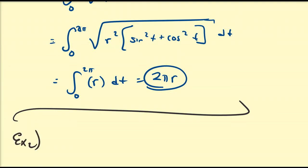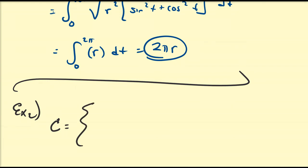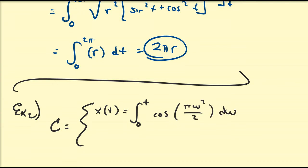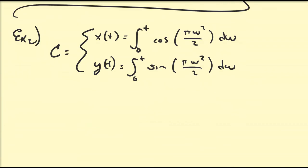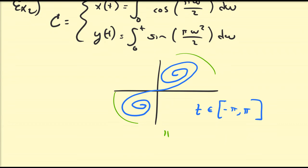Let's work through a second example. This shape is a little special, defined in a very special way. I'm going to define x of t to be equal to the integral from 0 to t of cosine of π·ω² over 2 dω, and y of t to be equal to the integral from 0 to t of sine of π·ω² over 2 dω. If you were to sketch this curve, you get a very interesting shape — something that looks like a spiral — with t ranging from minus π to π. This is what some people refer to as the Cornu spiral.